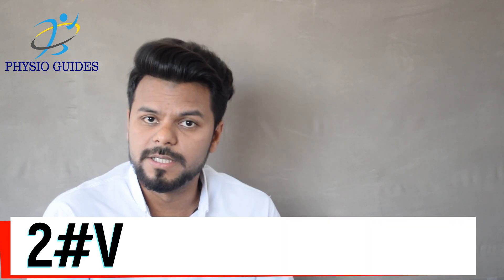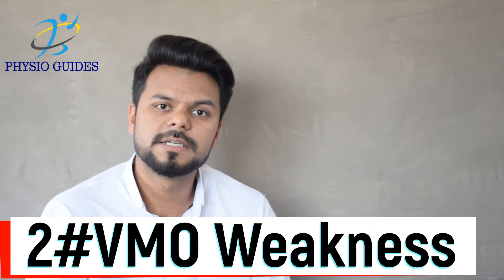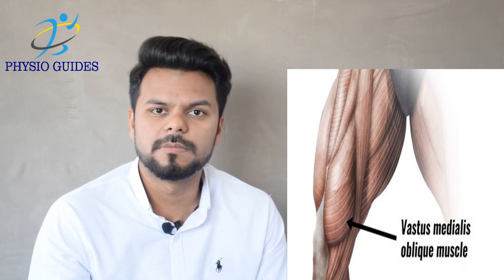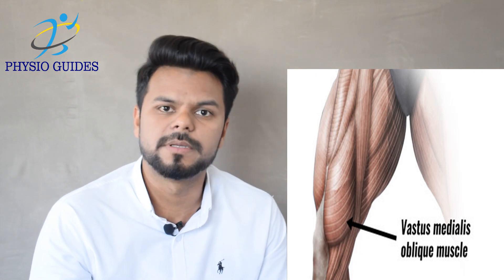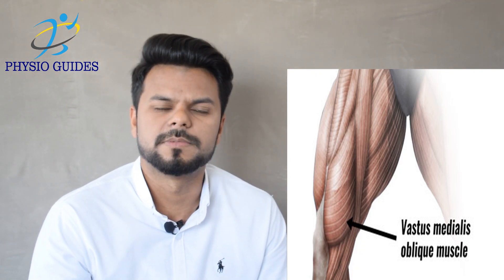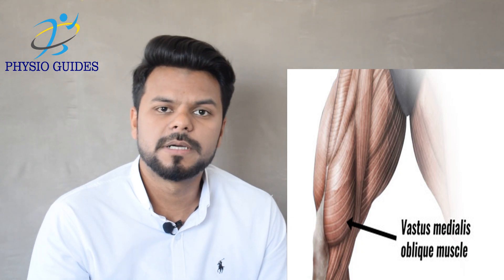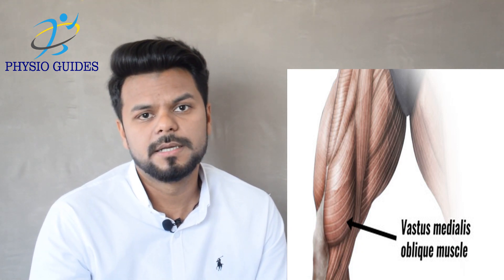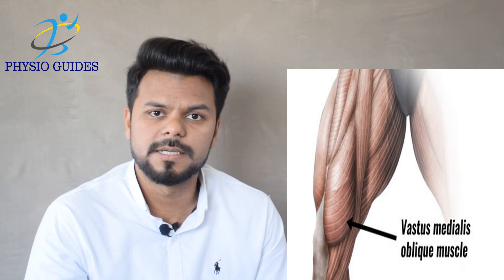The next cause is VMO weakening. VMO stands for Vastus Medialis Oblique muscle, present on the inner side of the thigh. This muscle is responsible for holding the patella in its original place. With the passage of time, if it weakens, the patella will shift to the outer side — resulting in patellar dislocation.